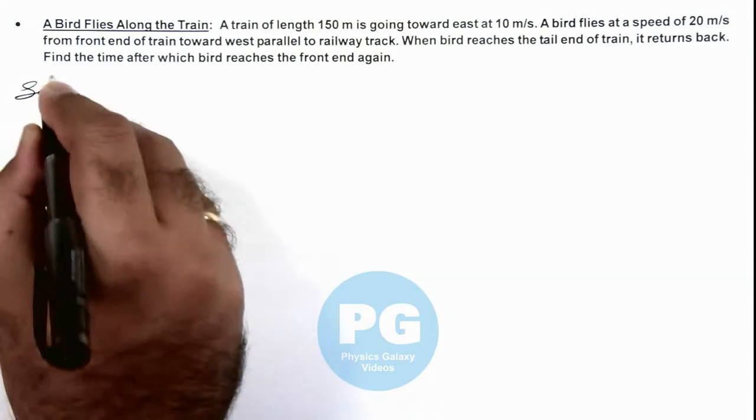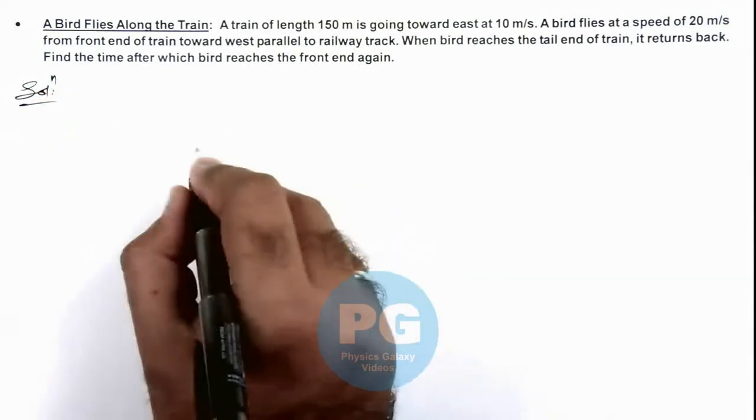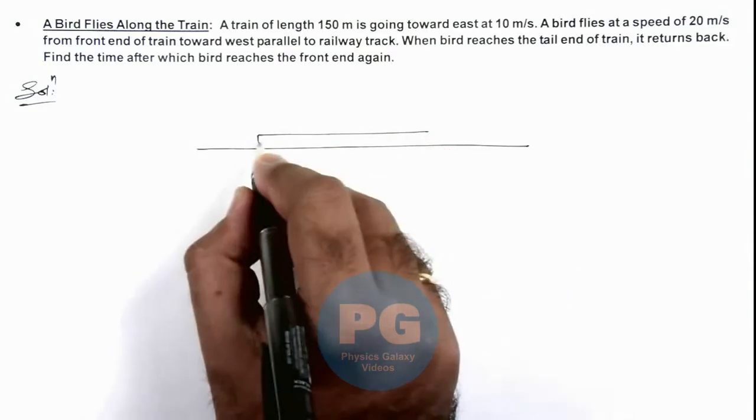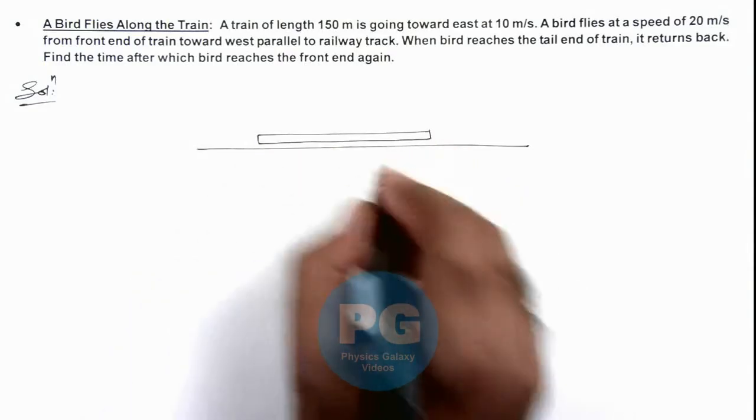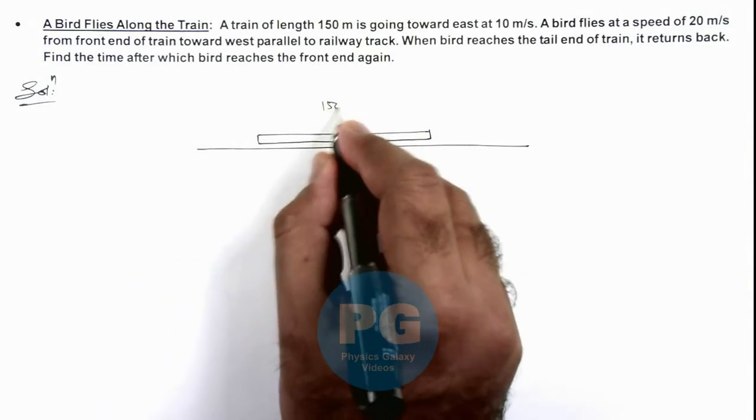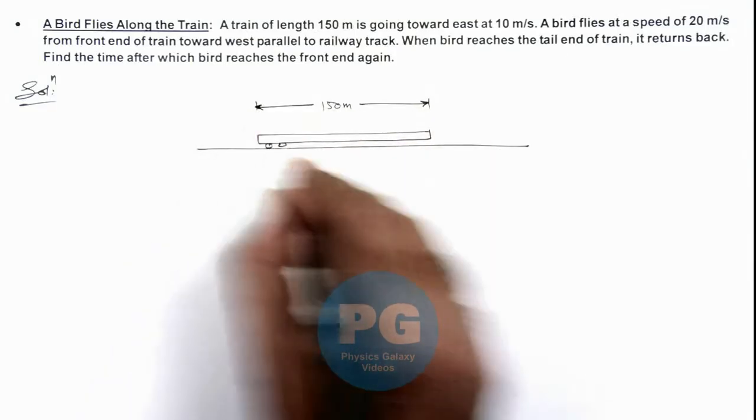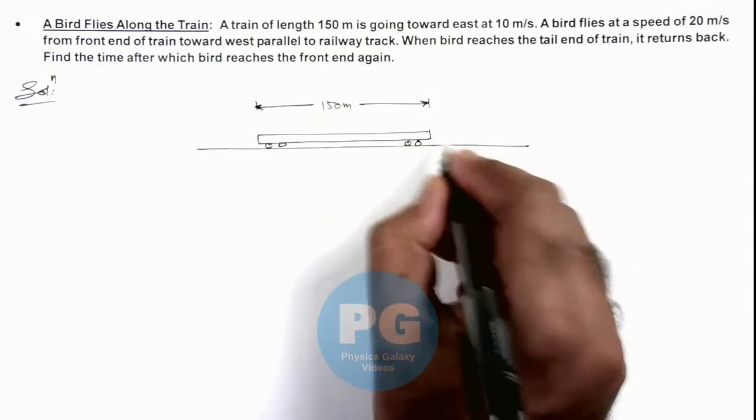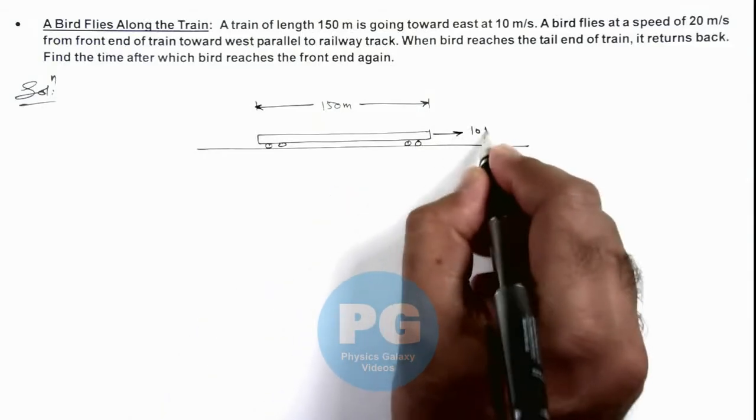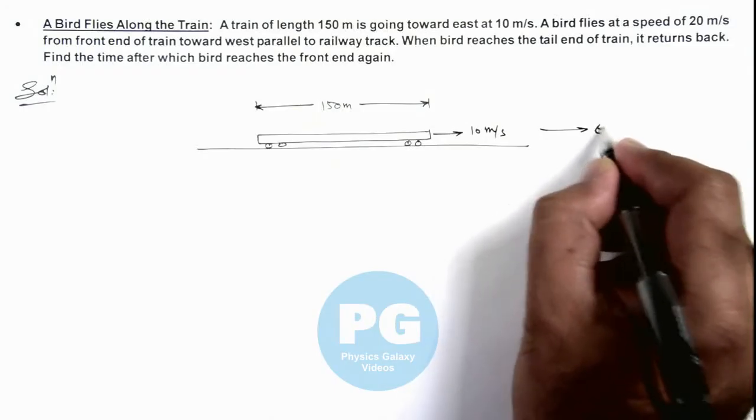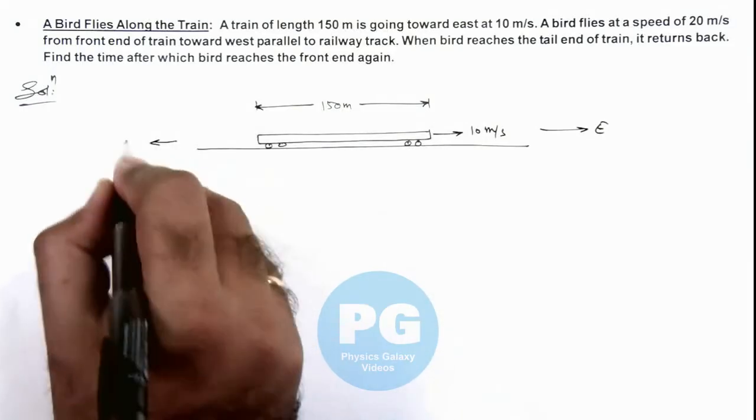Here, to understand the situation better, let's draw a situation. This is the train which is of length 150 meters, as given in the problem. The train is traveling at a speed of 10 meters per second toward east. Let's consider this direction as east and this direction as west.